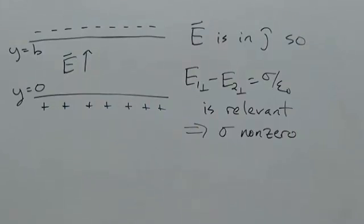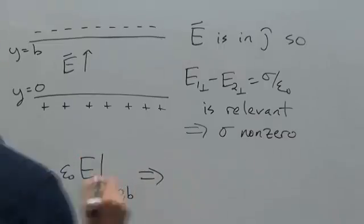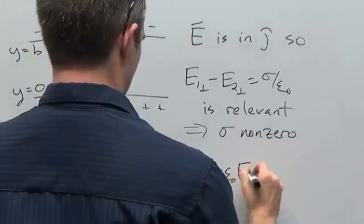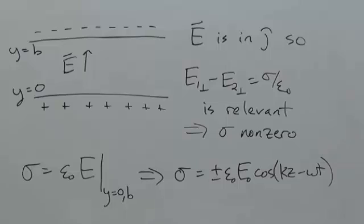The walls are conducting, meaning there can be induced charges in them, so we can satisfy this boundary condition if we infer that a certain kind of sigma is induced in the walls, in particular epsilon naught times E, giving us sigmas of plus or minus epsilon naught E_0 cos(kz minus omega t). Remember, charge needs to be real.